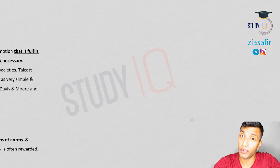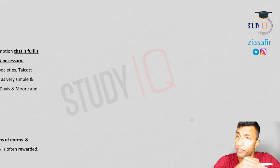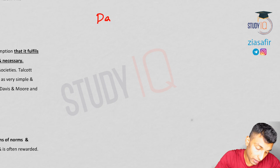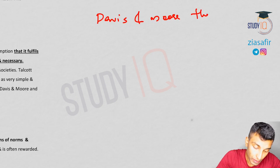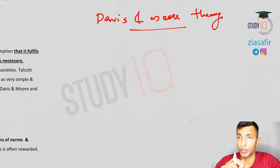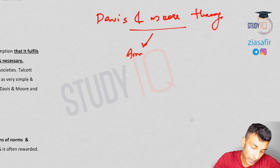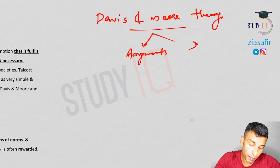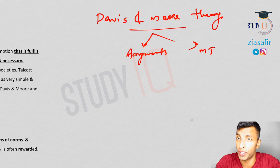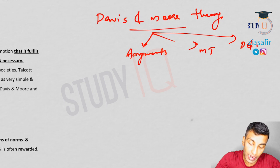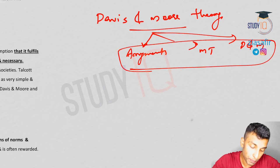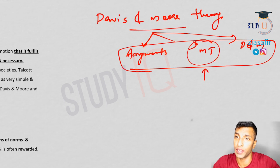Next is the Davis and Moore theory — even easier, although it is lengthy. Davis and Moore theory is a very lengthy but very easy theory, and you can relate it to yourself because these are very logical arguments. This theory is from the book 'Some Principles of Social Stratification,' 1942 — you need to write the book name and even the year, as these are important value additions that can fetch you half a mark.